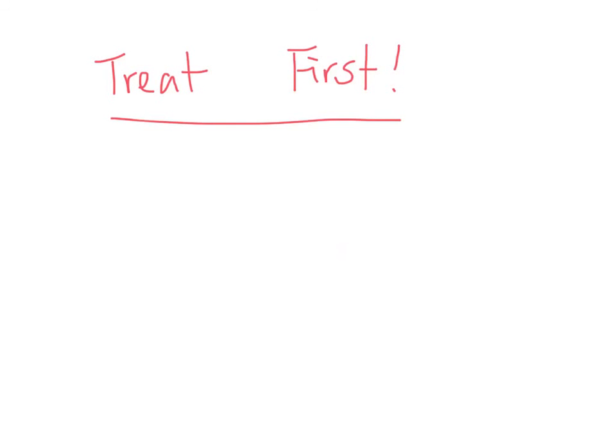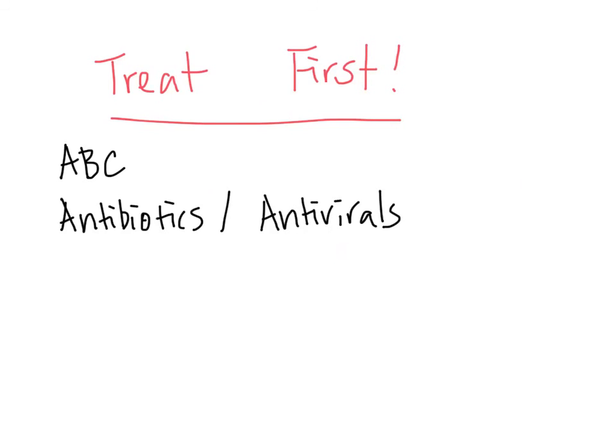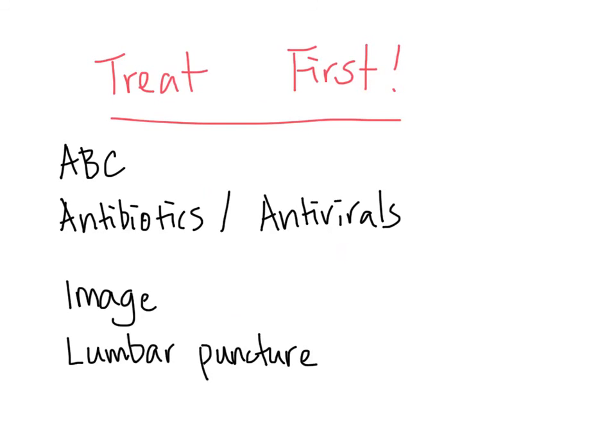In summary, we discussed the investigation and treatment of patients with suspected meningitis and encephalitis. Remember, we always treat before we investigate. This includes attending to the patient's ABCs, antibiotics for meningitis, and antivirals for encephalitis. For investigation, we may have to image patients who have focal neurological findings or decreased level of consciousness, and the main diagnostic tool is a lumbar puncture. We hope this has been a useful overview. Thank you for watching.